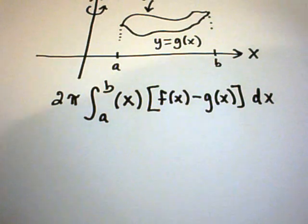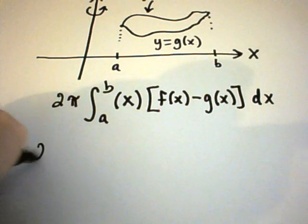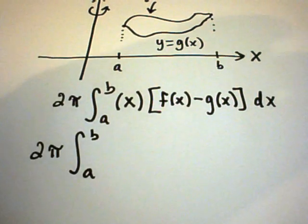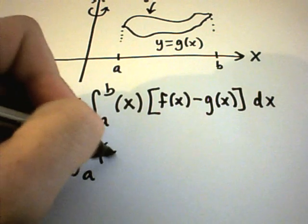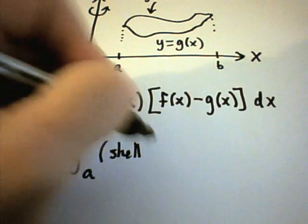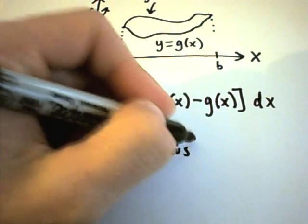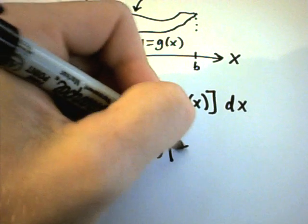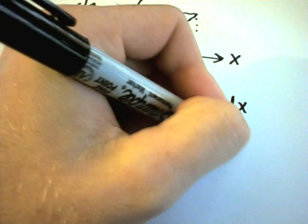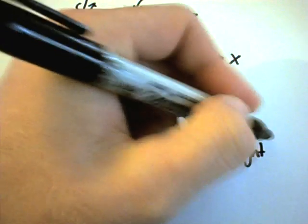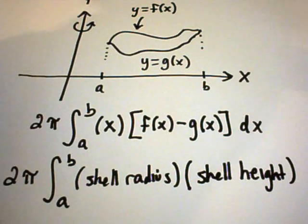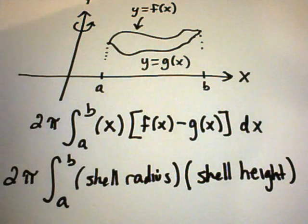In general, the way I like to think about this is it's 2π from a to b, and I think about it in terms of shell radius and shell height. You'll see what I mean by this in the next few examples. Again, this is the basic formula if you're rotating about the y-axis. So let's do a couple.